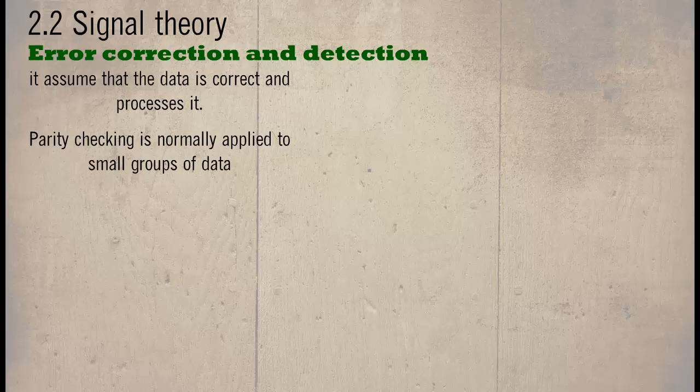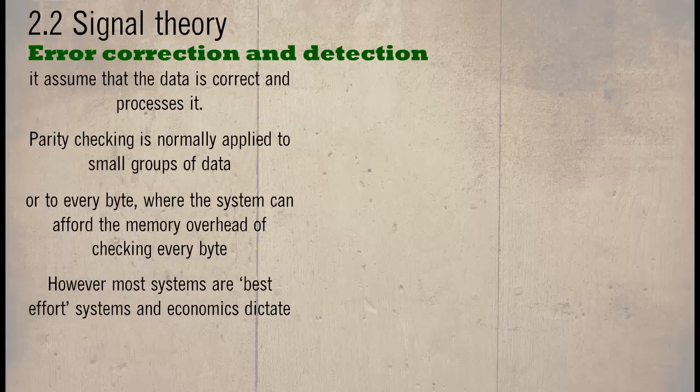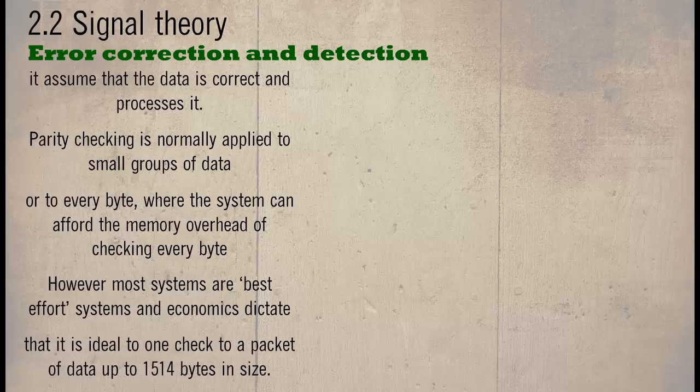Parity checking is normally applied to small groups of data or to every byte, where the system can afford memory overhead of checking every byte. However, most systems are best effort systems, and economics dictate the desired deal to check a packet of data up to 1514 bytes in size.